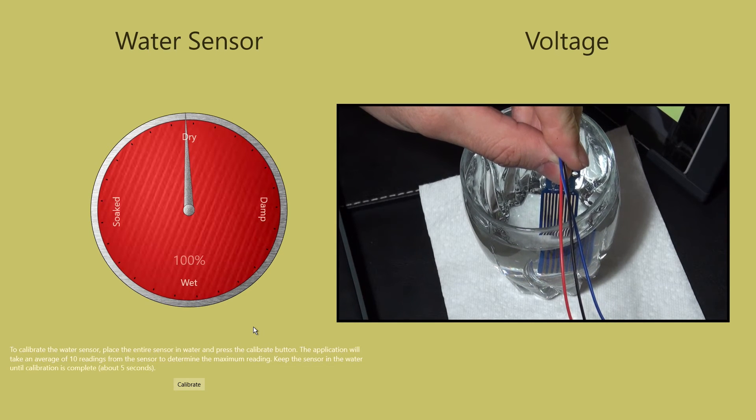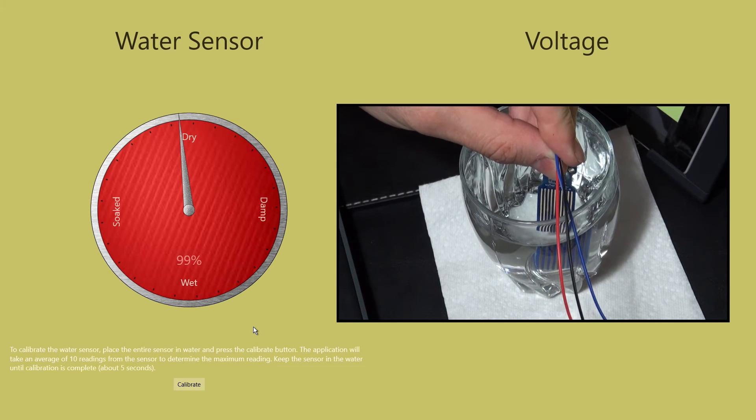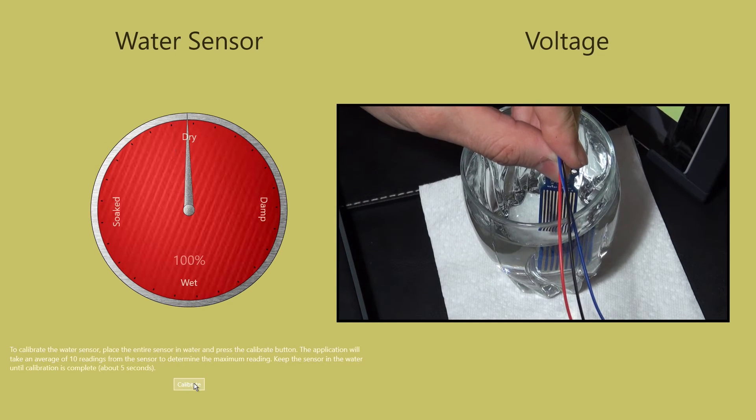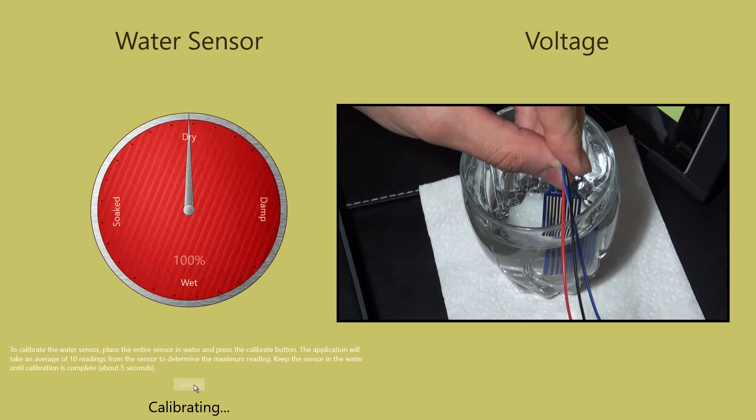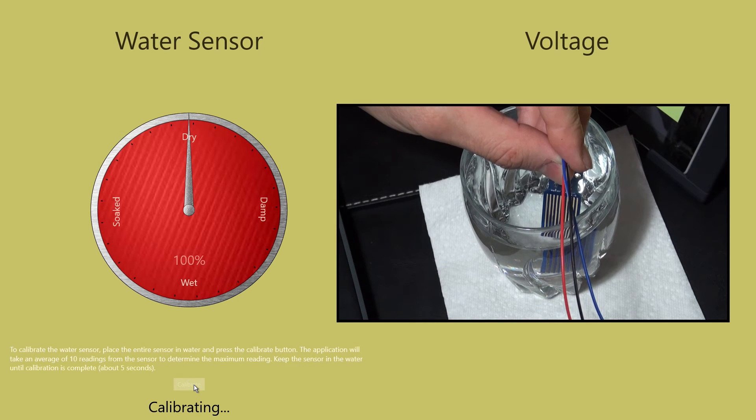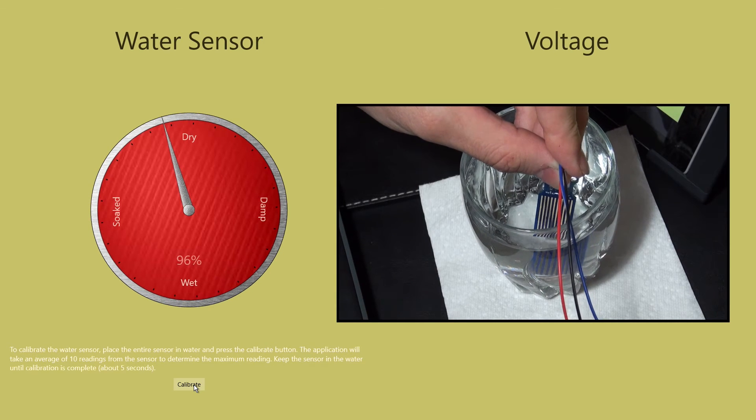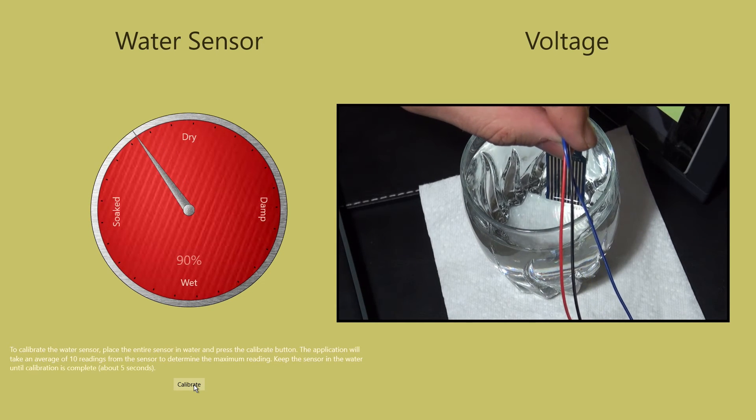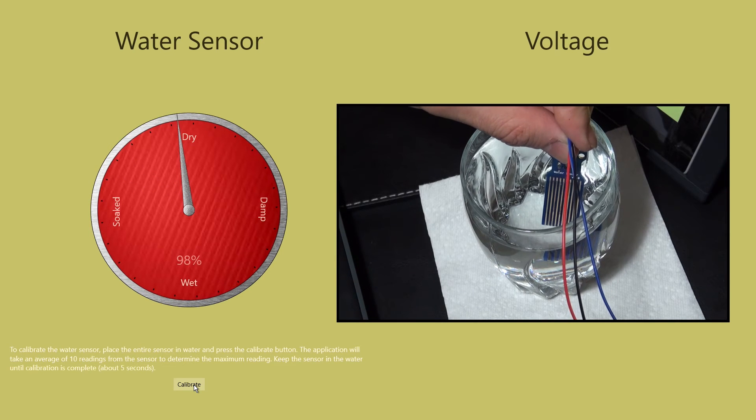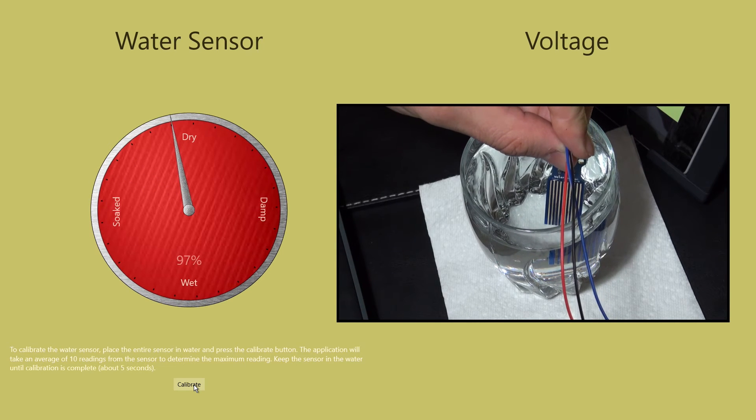Because of this, it makes sense to use this water detection device on an ADC. I have included an option in the software that allows the device to be calibrated. To calibrate the sensor, I place it completely into the water and then press the calibration button. The software will read the current sensor value and then use this as the maximum value. All sensor readings are then scaled to this value.